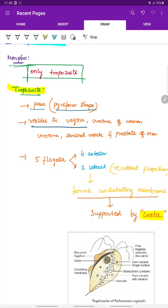It resides in vagina and urethra of women, urethra, seminal vesicle and prostate of men.